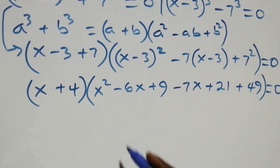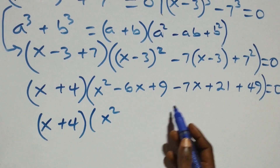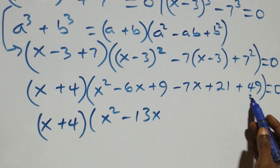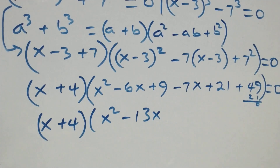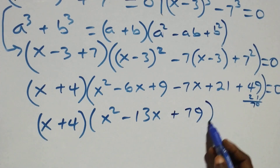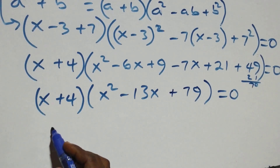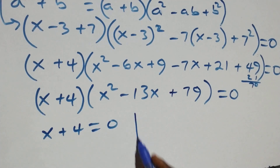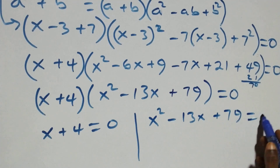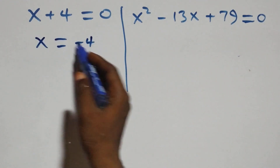Bringing terms together: (x plus 4)(x^2 minus 13x plus 79) equals 0, since minus 6x minus 7x gives minus 13x, and 9 plus 21 plus 49 gives 79. So the first case gives us x plus 4 equals 0, or x^2 minus 13x plus 79 equals 0. From the first factor, x equals minus 4, which is a real solution.